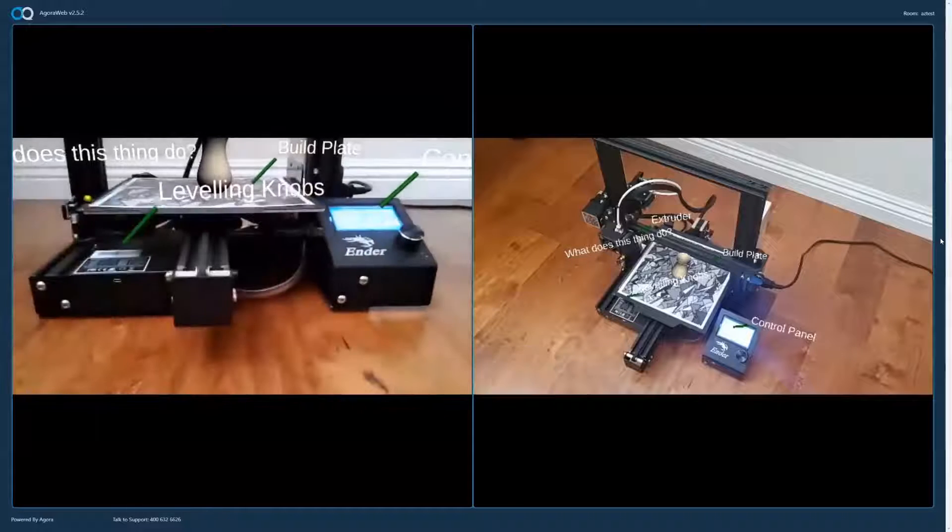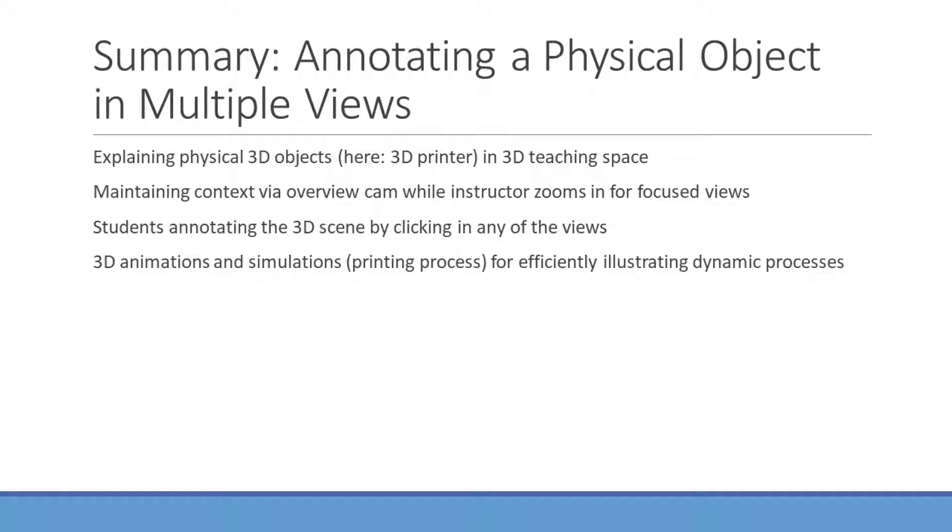In this lecture, we saw the instructor explaining a physical 3D object, specifically a printer, in their 3D teaching space. Using a mounted overhead view in conjunction with a focused view, the instructor could maintain context while talking about a specific component. We also saw a student asking a question directly in the 3D scene, allowing the instructor to quickly notice and comprehend the question. Finally, the animation efficiently illustrated a dynamic process, specifically printing with a 3D printer.